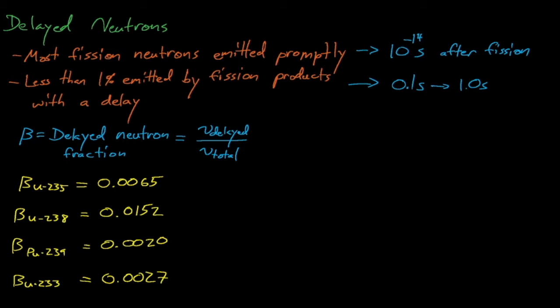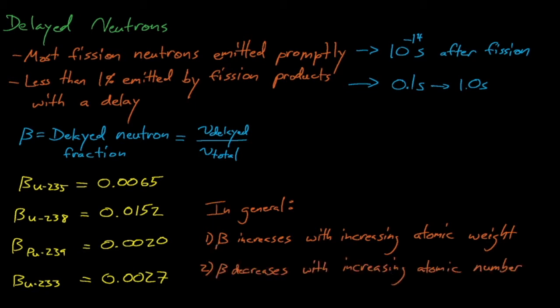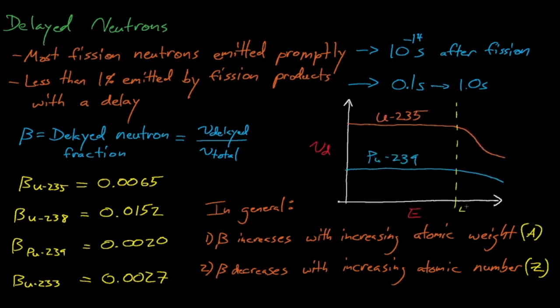The delayed neutron fraction varies for different fissile isotopes, as shown here, but in general, increasing a fission target's atomic weight, A, will increase its delayed neutron fraction, since this isotope's fission products will be more neutron-rich and even farther from stability, whereas increasing the fission target's atomic number will actually decrease its delayed neutron fraction, since its fission products are more likely to be closer to stability and less neutron-rich. Similarly, the delayed neutron fraction tends to decrease as the energy of the neutron that induces fission increases. This is because faster neutrons are more likely to knock out more prompt fission neutrons when their target isotope fissions, which results in fission products that are less neutron-rich and closer to stability.